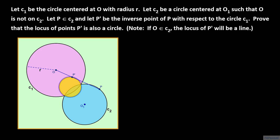Also, without loss of generality, we will assume that P is not on the same line as O and O1. We provide an outline for the proof. We construct the line through O and O1. This line intersects C2 at two points. If the two circles are not concentric, one point of intersection is the point on C2 farthest from O, and the second is the point closest to O. Let the farther point be Q and the closer point be S.